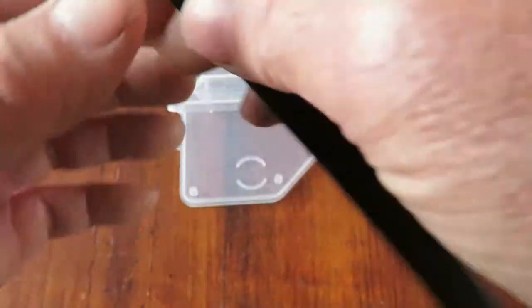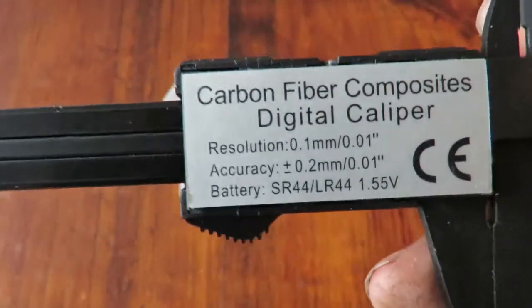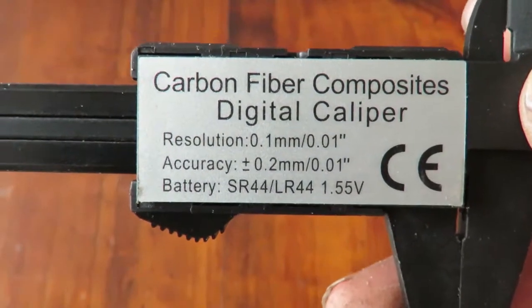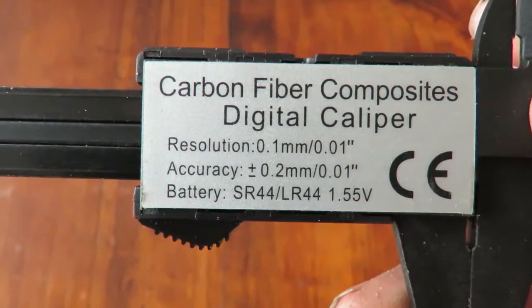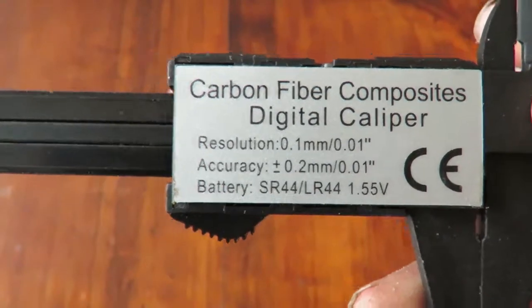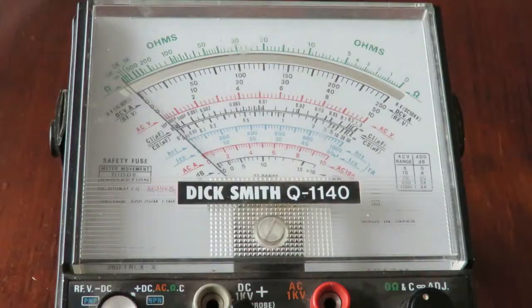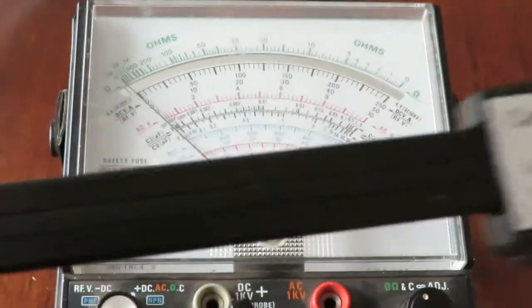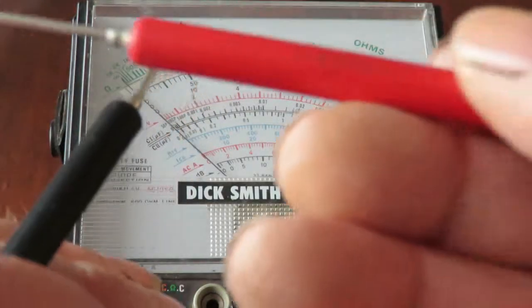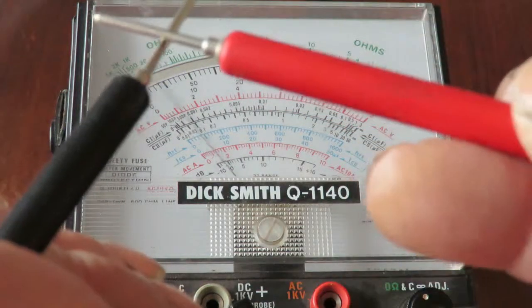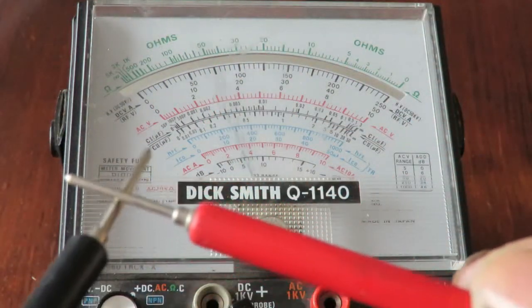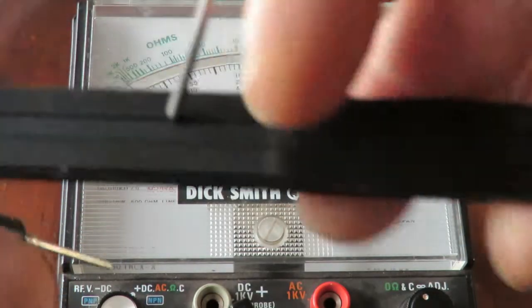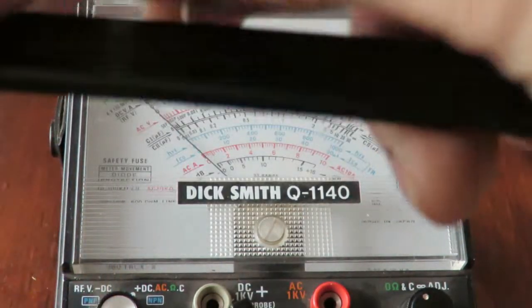I'll just turn that over so you can read the stuff on the back there for those that are interested, and those that aren't interested, well bad luck, you're getting to read it anyway. Now to test this little claim of being carbon fiber, just so you can see, I'll just touch the multimeter together. You can see we've got continuity through it and we'll check a section here.